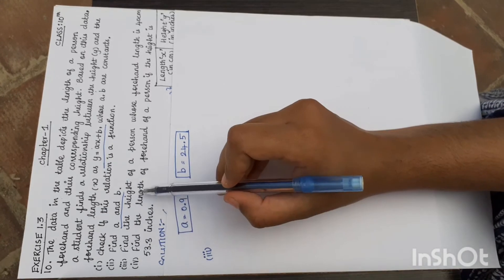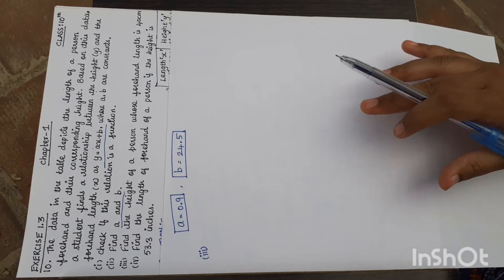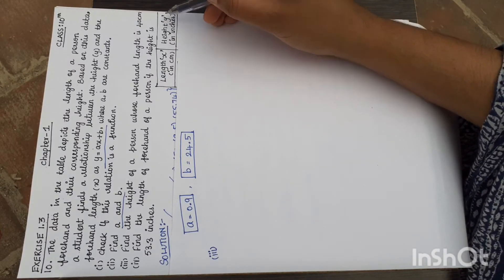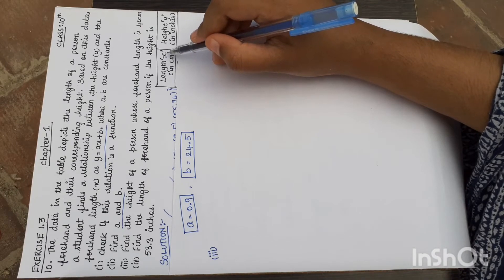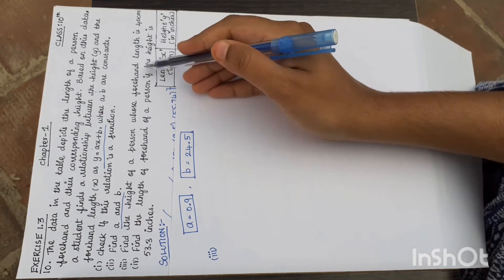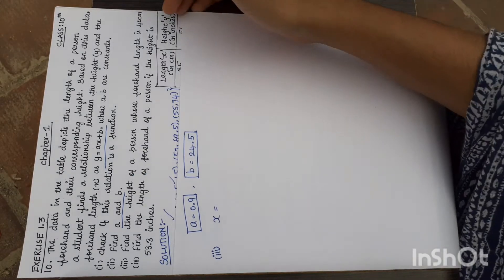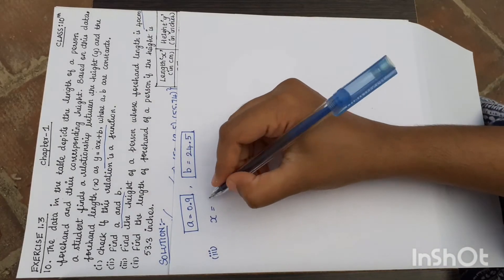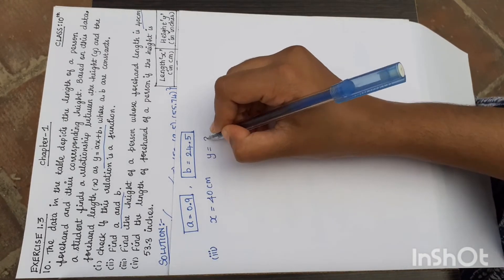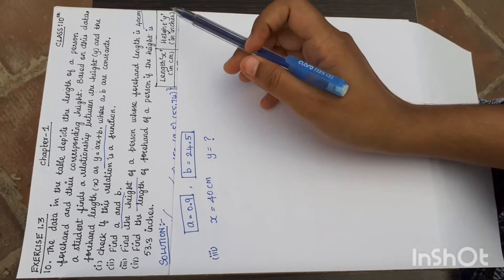Third subdivision: find the height of a person whose forehand length is 40 cm. Forehand length is given, which is x. So x value is 40 cm. What is our y? That is our height. Find the height.